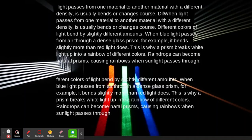Light passes from one material to another material with a different density usually bends or changes course. Different colors of light bend by slightly different amounts. When blue light passes from air to a dense glass prism, for example, it bends slightly more than red light does. This is why a prism breaks white light up into a rainbow of different colors.